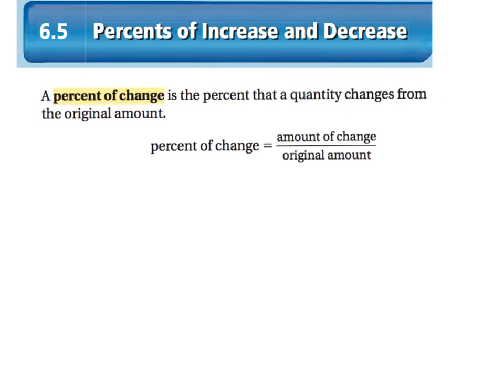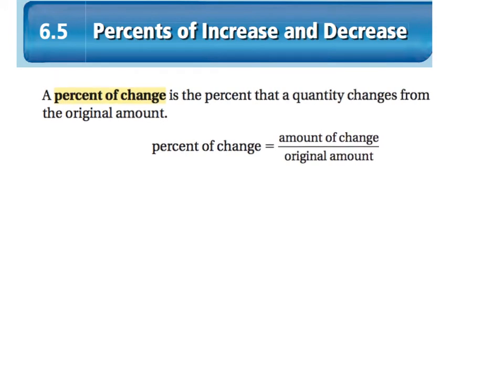So the first thing we're going to talk about is the percent of change. The percent of change is the percent that a quantity changes from the original amount. So that change could be an increase or a decrease. To find the percent of change, you would take the amount of change and divide it by the original amount.